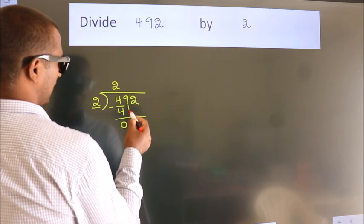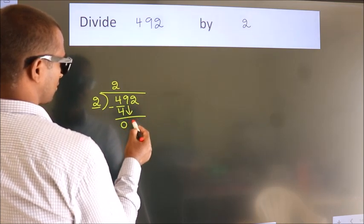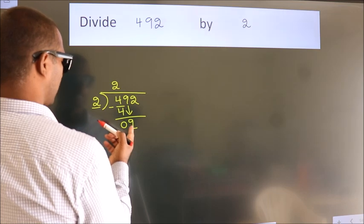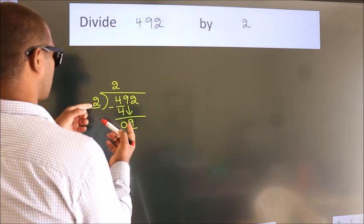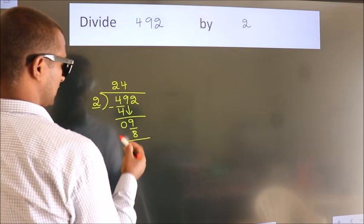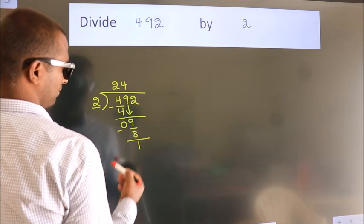After this, bring down the next number. 9 comes down. We need a number close to 9. In the 2 table, 2 4s are 8. Now we subtract. We get 1.